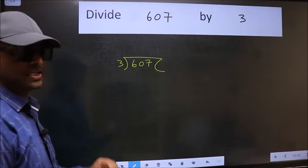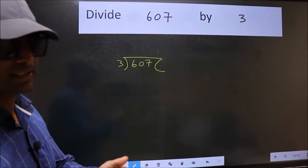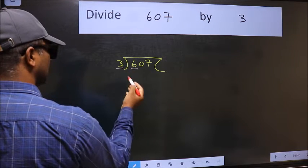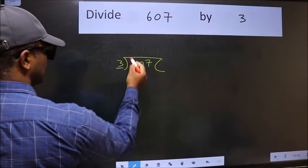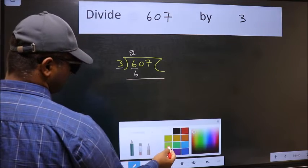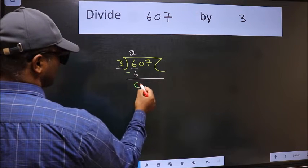This is your step 1. Next, here we have 6 and here 3. When do we get 6 in 3 table? 3 times 2 is 6. Now we should subtract. We get 0.